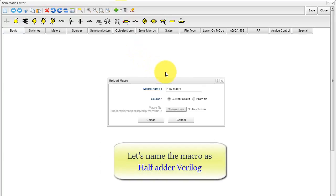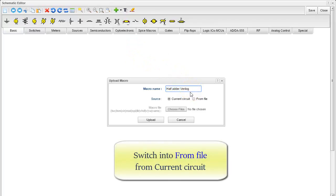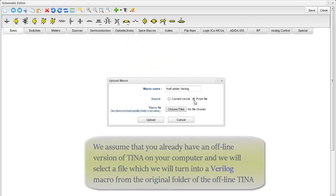Let's name the macro as HalfAdderVerilog. Switch into From File from Current Circuit. We assume that you already have an offline version of Tina on your computer, and we will select a file which we will turn into a Verilog macro from the original folder of the offline Tina.